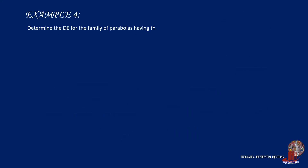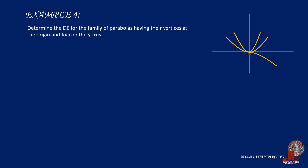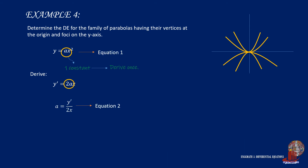Example number 4: Determine the differential equation for the family of parabolas having their vertices at the origin and foci on the y-axis. For a parabola with vertex at the origin and foci on the y-axis, we have a vertical parabola, so the formula is y equals ax squared. With a as a constant, we derive once to get y-prime equals 2ax. Substituting to eliminate a, we get y equals y-prime over 2x times x squared, simplifying to 2y equals x y-prime, or x y-prime minus 2y equals 0.